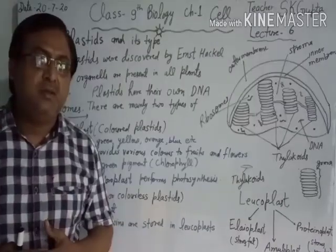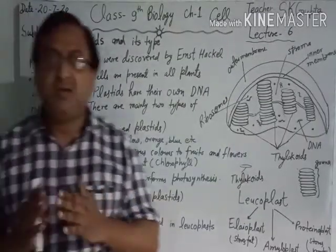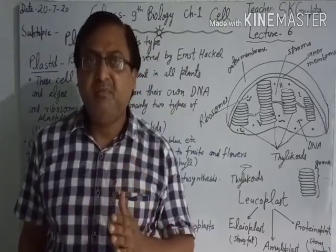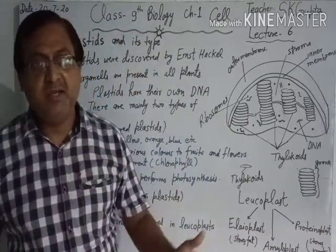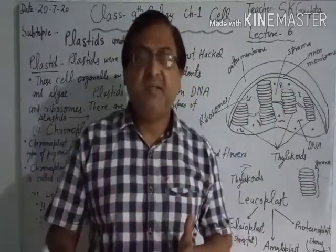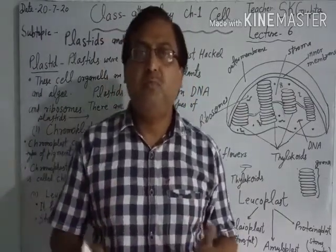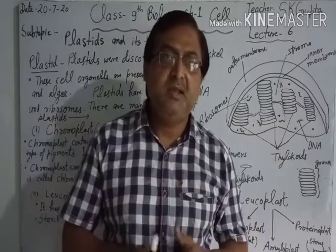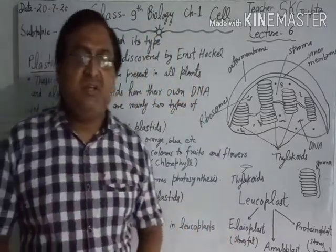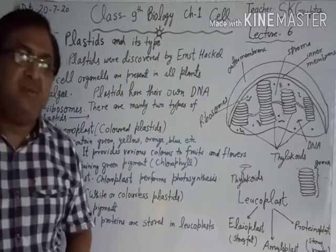They gain their color at different stages. For example, if a tomato is unripe it will have chloroplasts, but when the tomato ripens, the chloroplasts change into chromoplasts. Plastids can change their color at different time intervals.